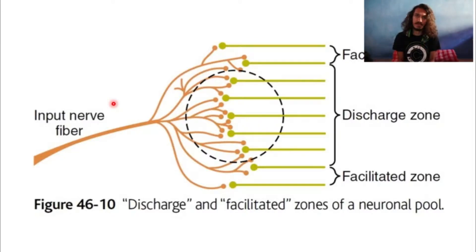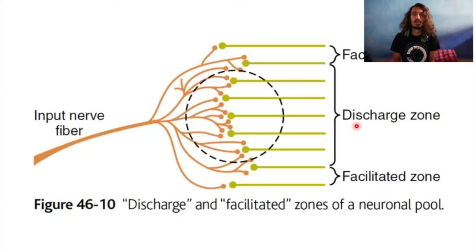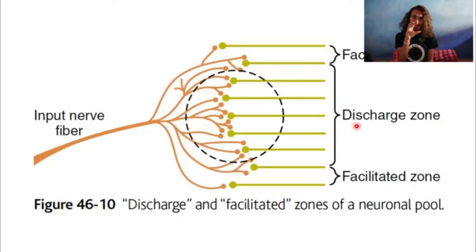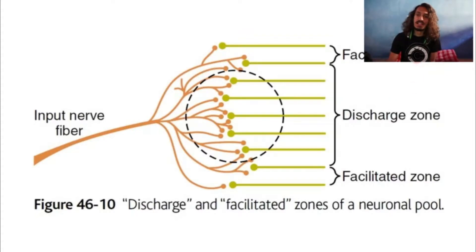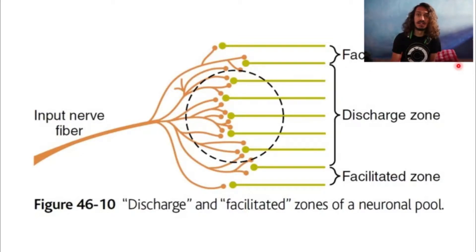There is a definitive area which this exclusively goes to — that is the discharge zone. So what happens is this central discharge zone is one in which this particular axon is going to exclusively fire. On the other hand, on the periphery or outliers, there is a facilitated zone. This one central area is a major discharge zone, and on the periphery you can see facilitated zones.